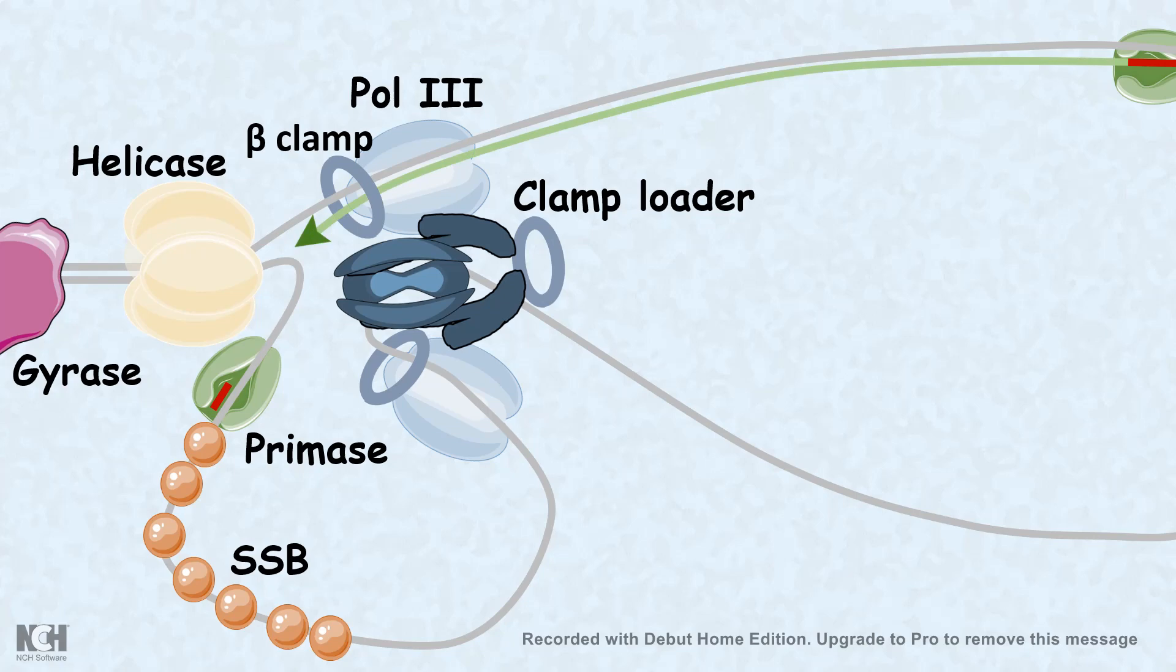One strand, as you can see here, the synthesis takes place pretty continuous. It is called the leading strand. In the other case, the synthesis is discontinuous and takes place in several phases or in turns. So this second strand is known as the lagging strand. And the lagging strand replication is a bit different from the leading strand.